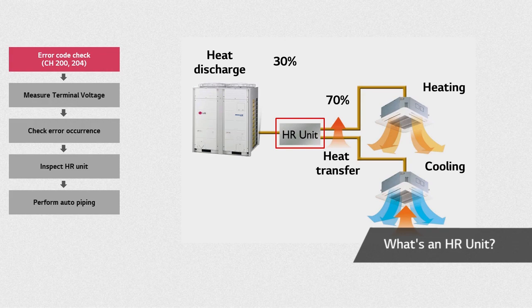Once the HR unit gets the signal from the outdoor unit, it starts communicating with indoor units and then performs pipe detection. Errors CH200 and CH204 can occur at any of these steps.